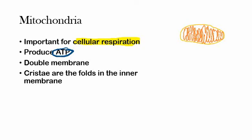As far as the anatomy of the mitochondria goes, know that cristae are the folds in the inner membrane. They look like little sacs — those little red structures you can see. They're cristae, the folds in the inner membrane, so know what that is.